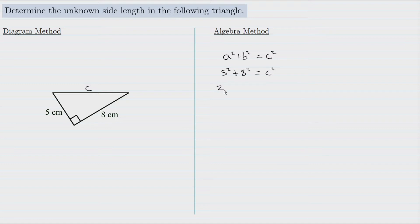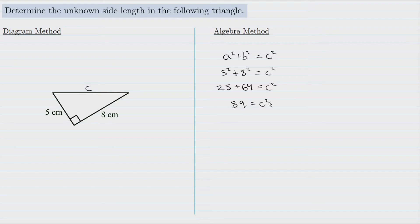5 squared is 5 times 5 which is 25. 8 squared is 8 times 8 which is 64. That equals c squared. We can add these two numbers: 25 plus 64 gives us 89, and that's c squared. So how can we figure out what c is? We could use our calculator and just use the opposite of squaring — the inverse operation — which is to square root.